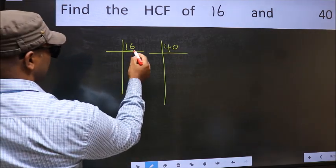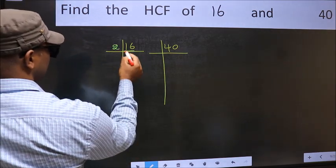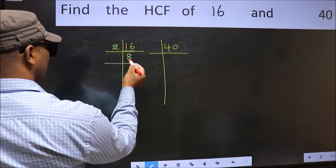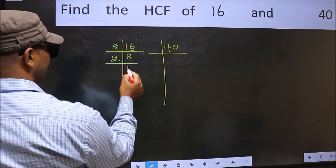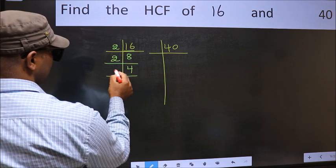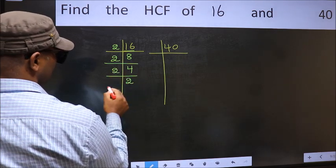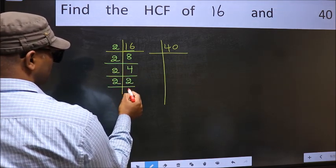Here we have 16. 16 is 2 times 8. 8 is 2 times 4. 4 is 2 times 2. 2 is a prime number so 2 times 1 is 2.